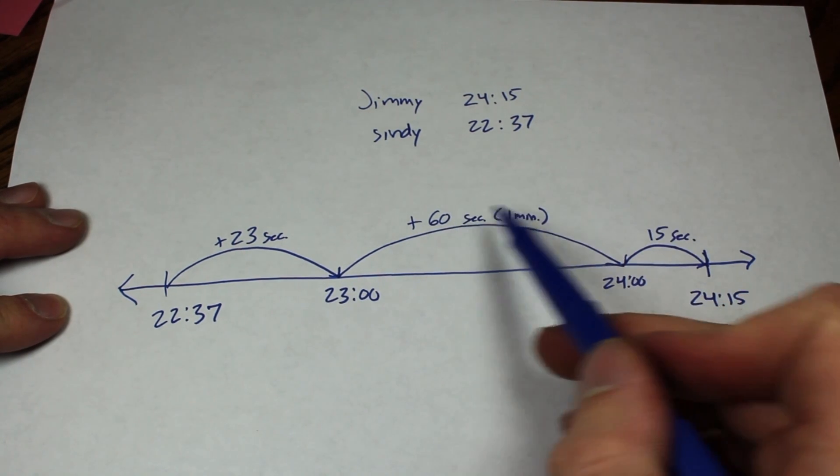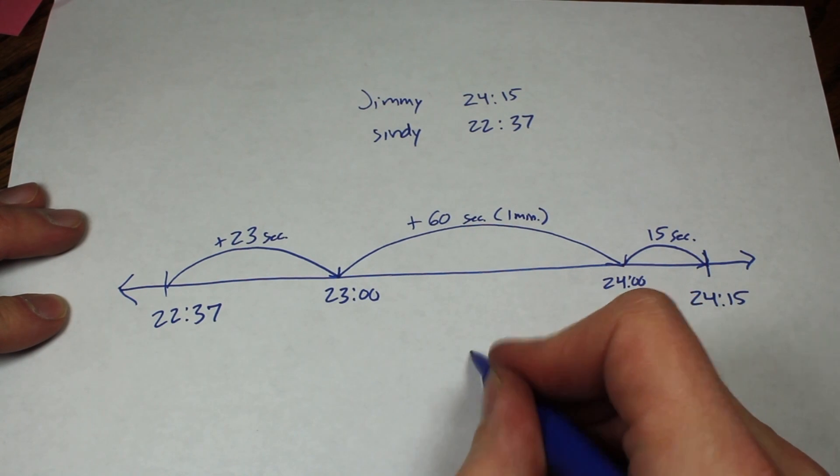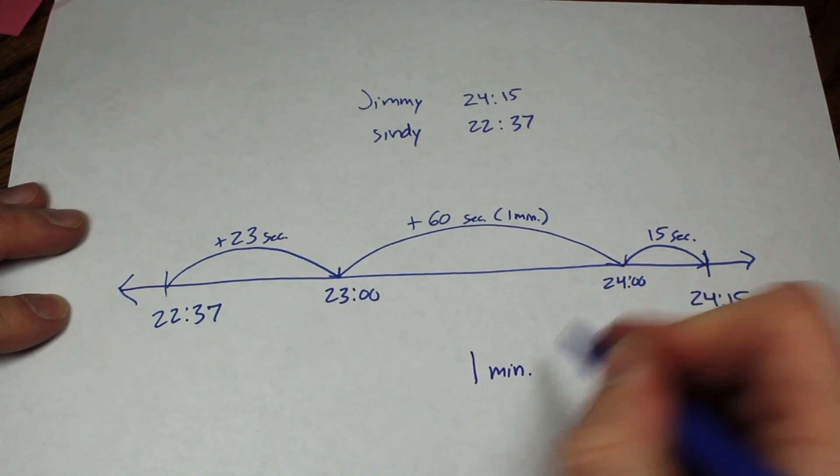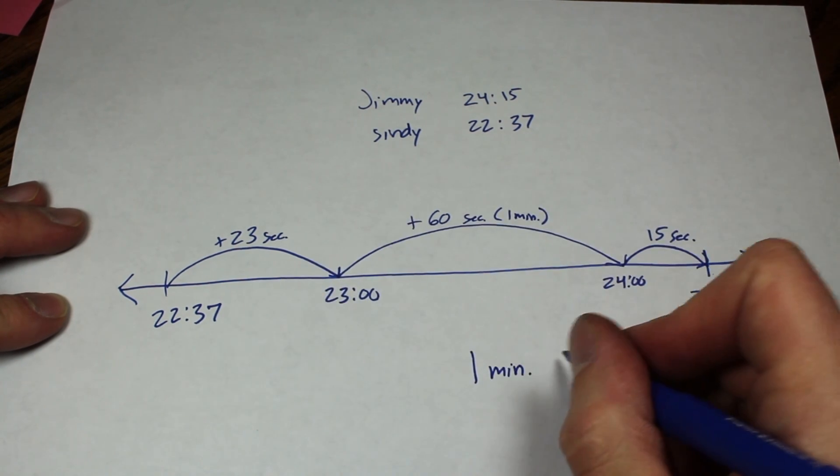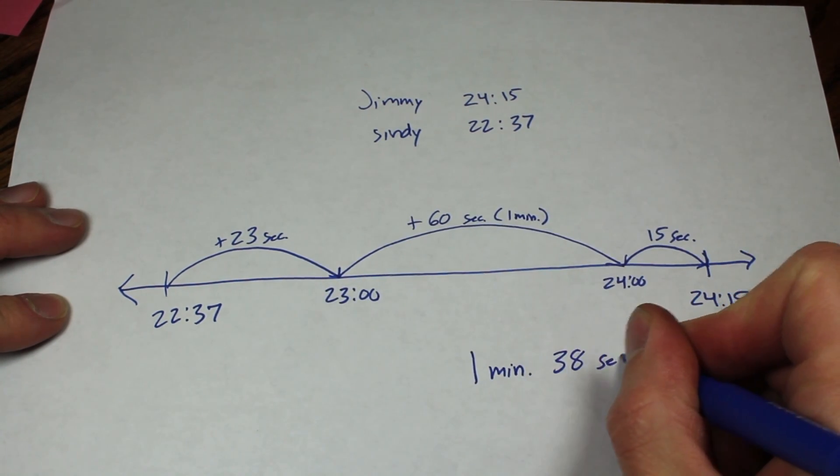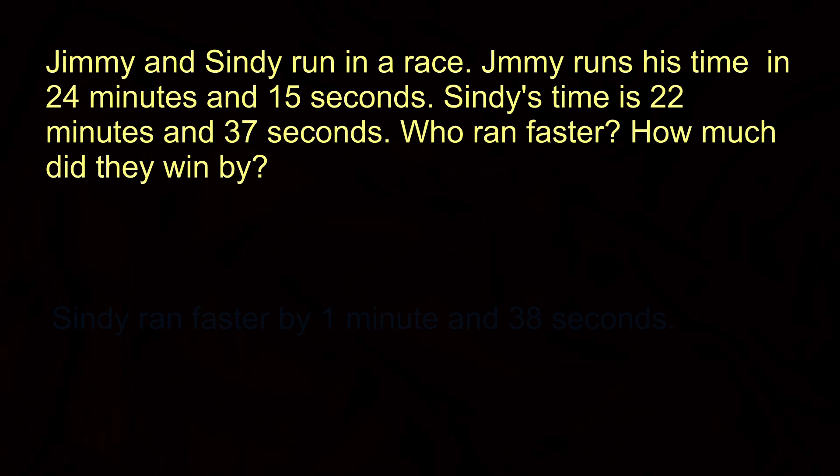So 60 seconds, or one minute, plus 23 seconds and 15 seconds, so that's 38. Using the number line is going to be one of the most effective ways of solving a problem that deals with time, and this is how you would go about doing it.